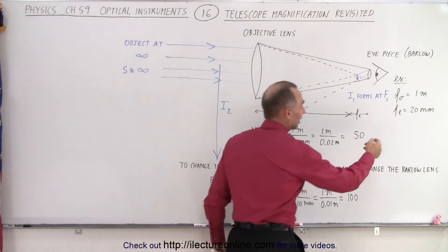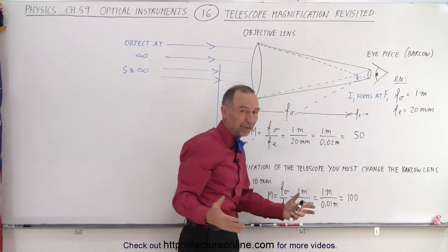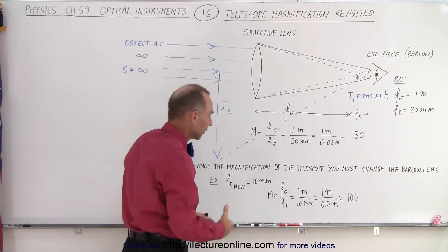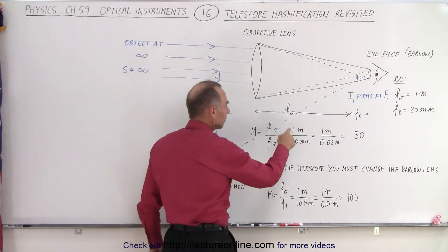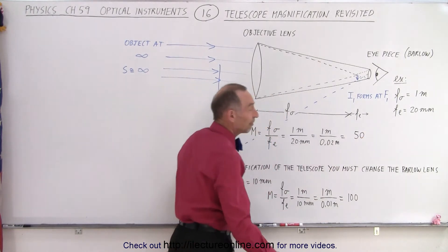As an example, let's say that the focal length of the objective is one meter and the focal length of the eyepiece is 20 millimeters for a typical amateur small telescope. You can then take one meter divided by 20 millimeters which is 0.02 meters and you have a magnification of 50.